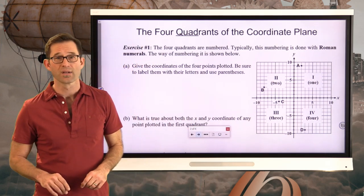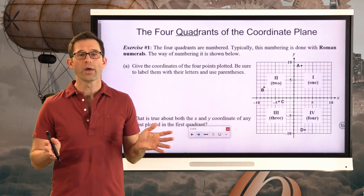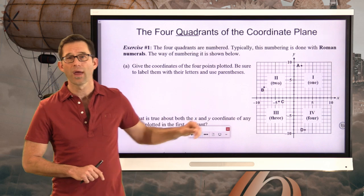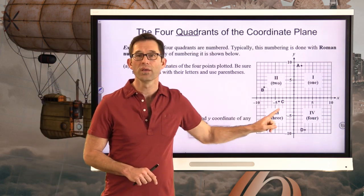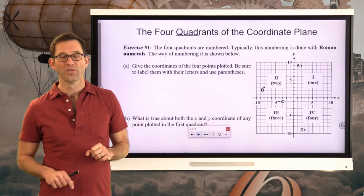The four quadrants are numbered, typically with Roman numerals, as shown. Letter A asks us to give the coordinates of the four points that are plotted. Be sure to label them with their letters and use parentheses. Pause the video now and tell me the coordinates of A, B, C, and D.